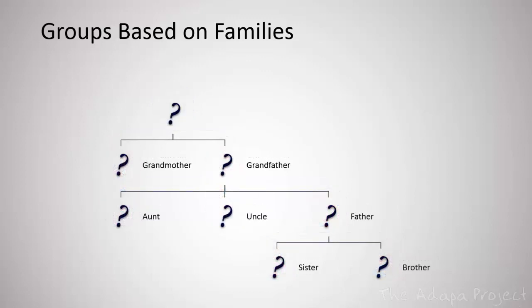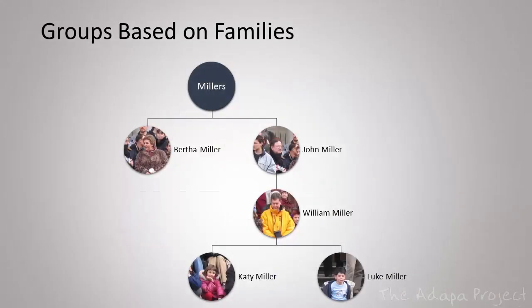Unfortunately, you don't know anybody in your kingdom yet and the only information you have is their names and a picture. You don't want to wait until your administration collects all additional data for you, so you start to sort them by their last names and how they look. Here is an example of the Miller family tree you just reconstructed. It contains three generations of people who have Miller as their last name and from whom you think they could be related based on their looks.